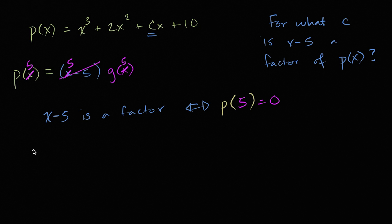All right. So we're going to get five to the third power, so p of five is equal to five to the third is 125, plus two times five squared, so it's two times 25 plus 50, plus c times five plus 5c plus 10, that needs to be equal to zero.